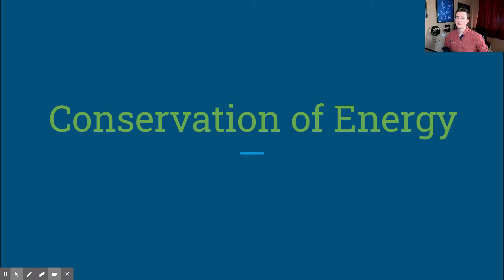We talked about the two broad types of energy: kinetic and potential. Those are the two overall types — kinetic and potential — and that's what we're going to focus on a bit more here with conservation of energy, looking at how those two work together to form our total energy, which is sometimes called our mechanical energy.